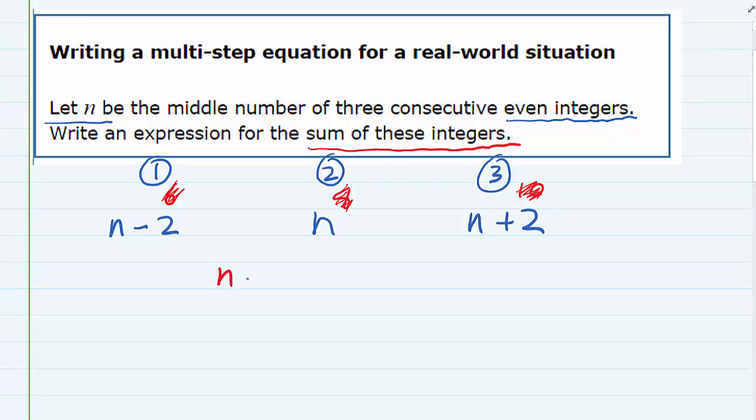Our expression is n minus 2, that's the first one, plus the second one, that's the n, plus the third one, n plus 2.